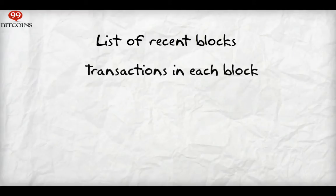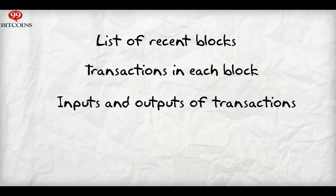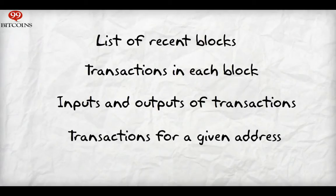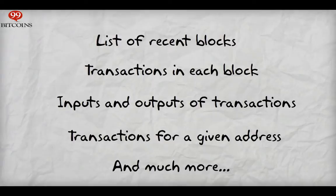Usually the block explorer software will supply some or more of the following: a list of a chain's recent blocks, transactions in a given block, links to the previous and next transaction involving each input and output, a list of all transactions involving a given address, current and historical address balances, and a way to search for blocks, transactions, and addresses.